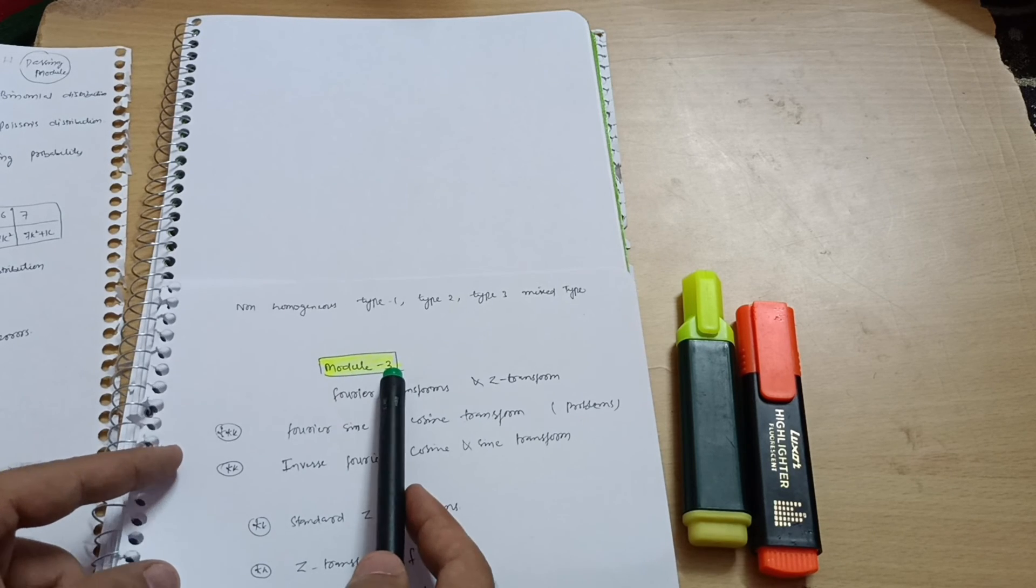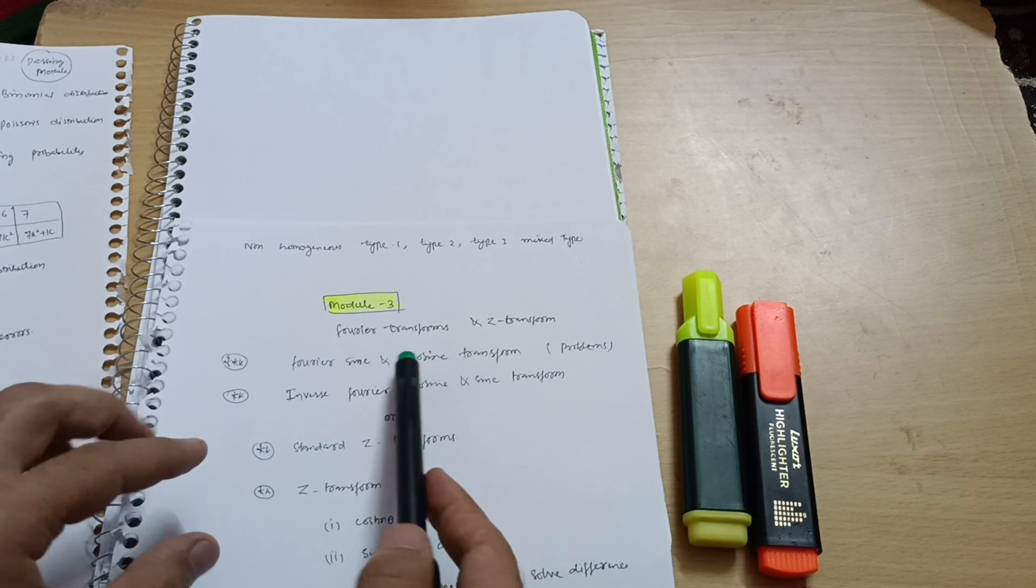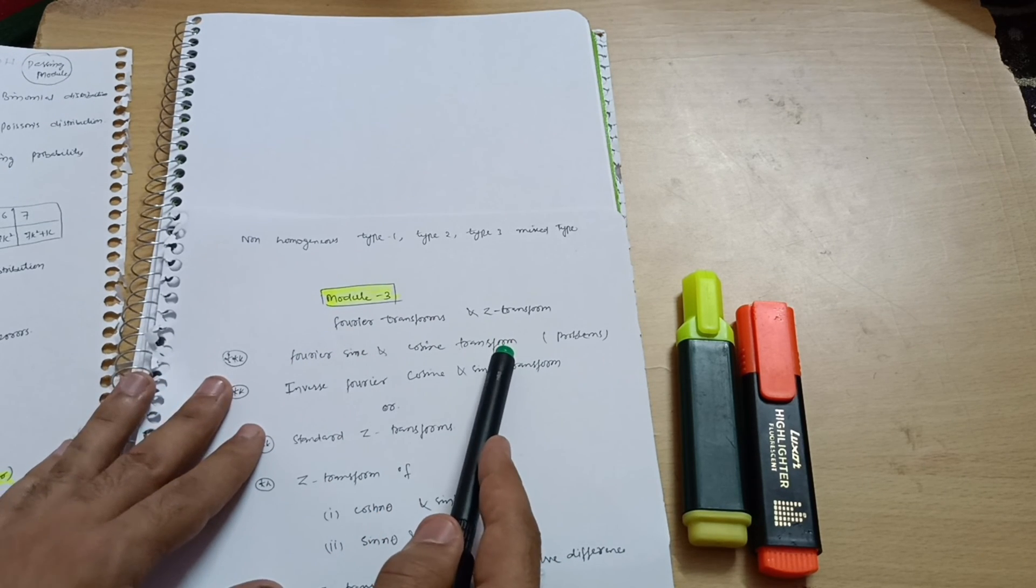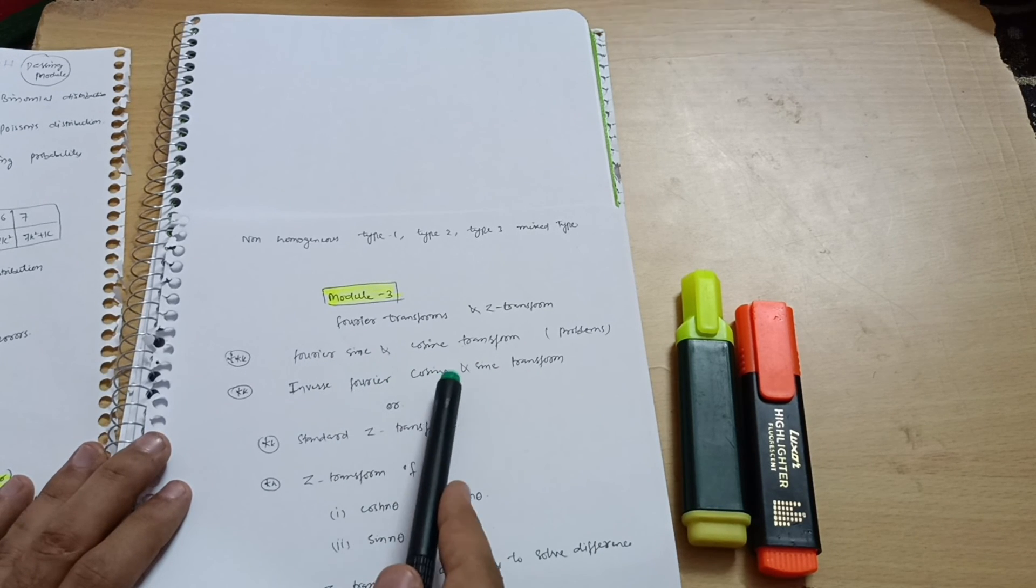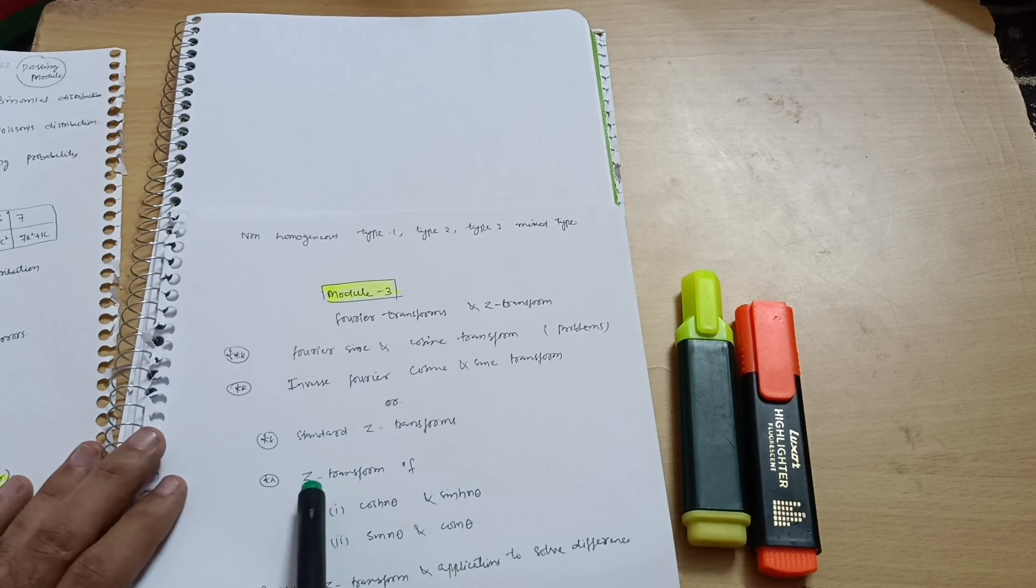Let us move towards Module 3, that is Fourier transform and Z transform, in which you should cover at least these problems: Fourier sine and cosine transform. Already I have uploaded the video on this problem also. And inverse Fourier cosine and sine transform.